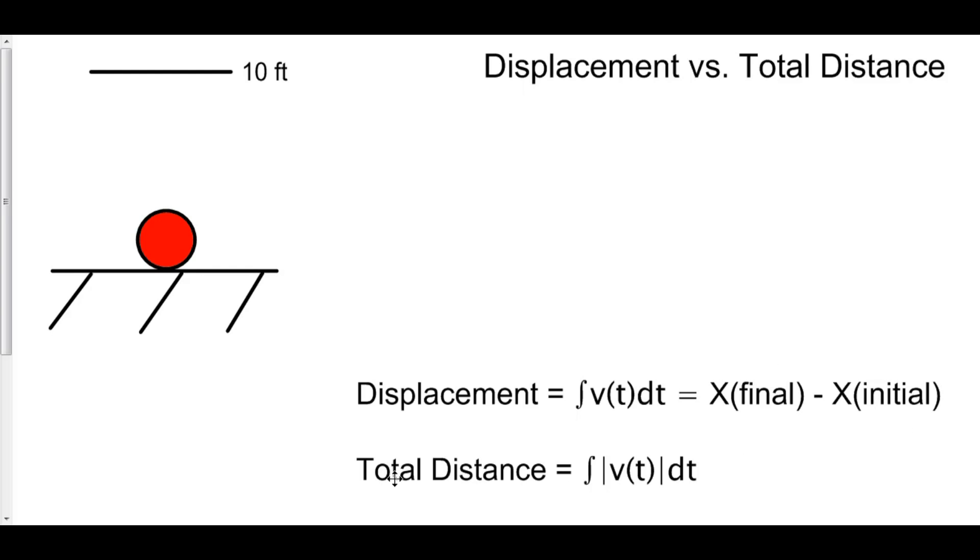Meanwhile, your total distance is the integral of the absolute value of velocity. Let's see what this means in context with our bouncing ball. The ball goes up to ten feet. At this point, both the displacement and the total distance is ten.